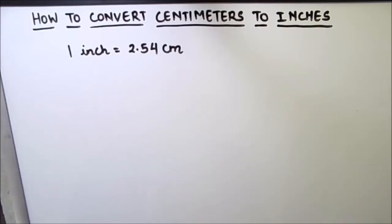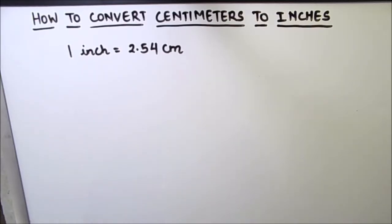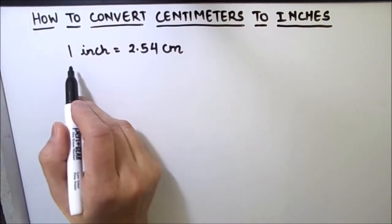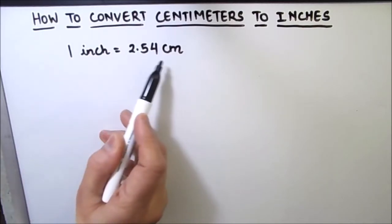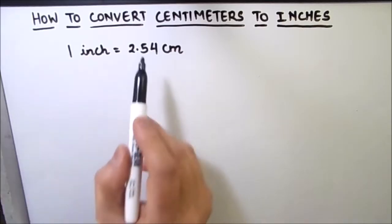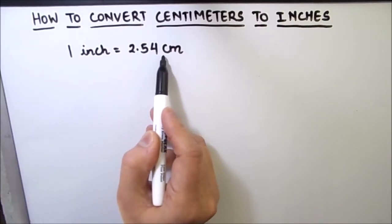Hello everyone. Today in this video we are going to learn how to convert centimeters to inches. I have already uploaded a video on converting inches to centimeters. Before we start our conversion, let us know the basic relation between inch and centimeter. The relation between inch and centimeter is: one inch is equal to 2.54 centimeters. I have taken up to two decimal places — you can take up to three or four decimal places for more accuracy.